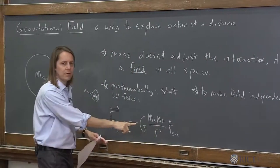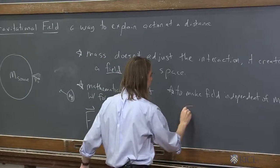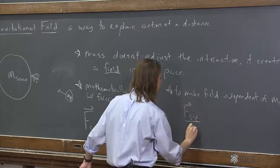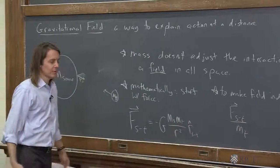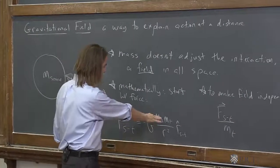What would we do? Well, there's an M test right there. Just divide by M test. So we say the field really is the force that the source mass creates on the test mass divided by the magnitude of the test mass in kilograms. If we do that, it's the same thing. It's just missing that term.